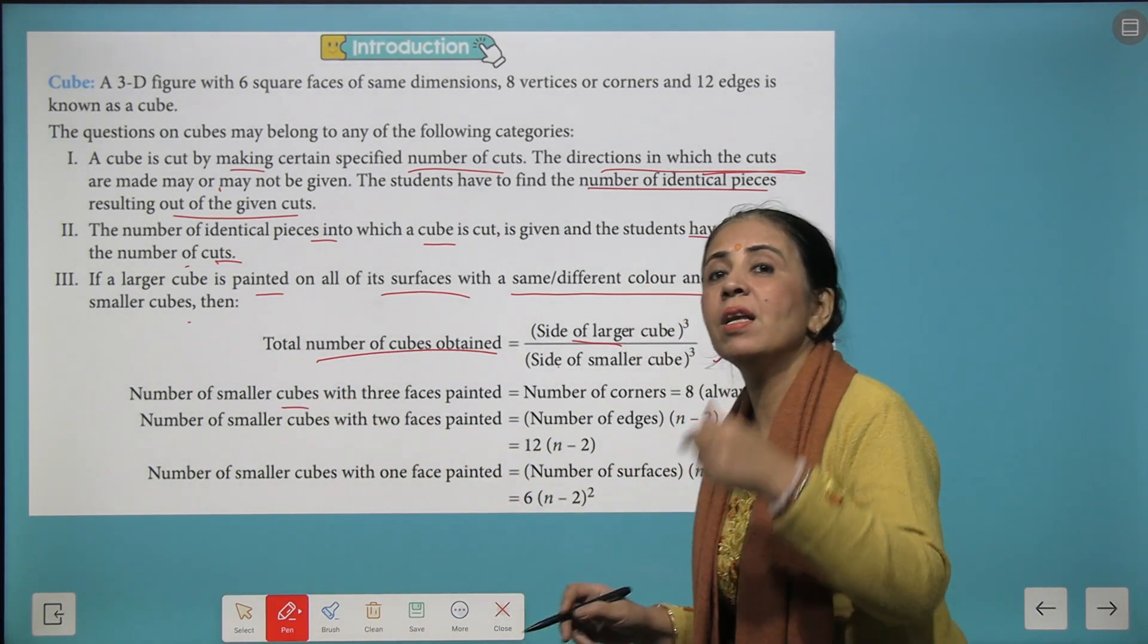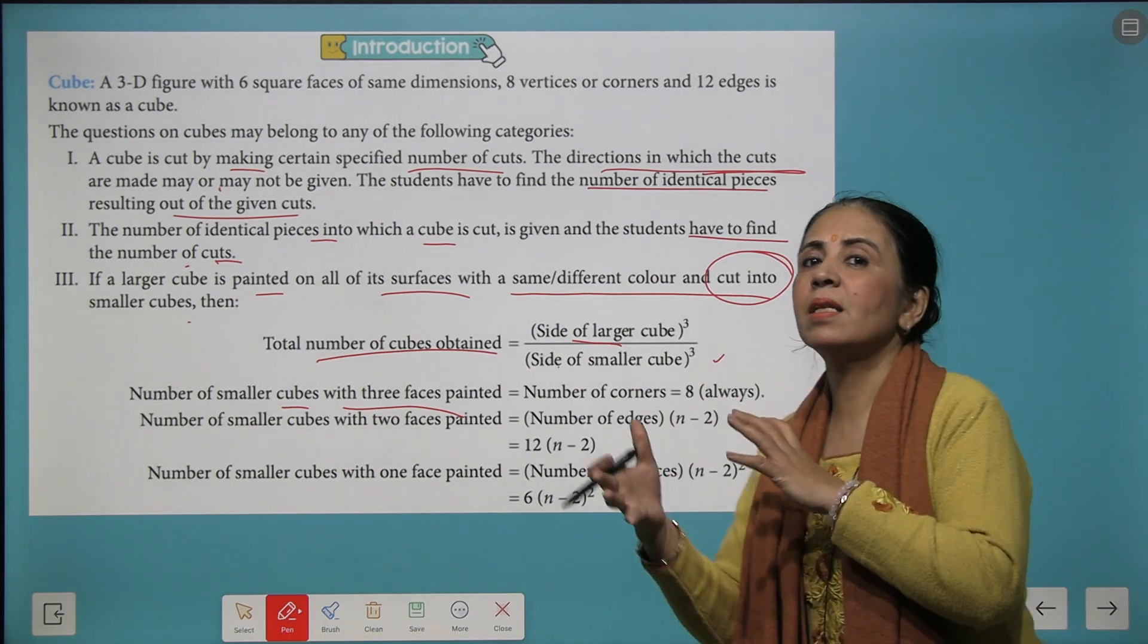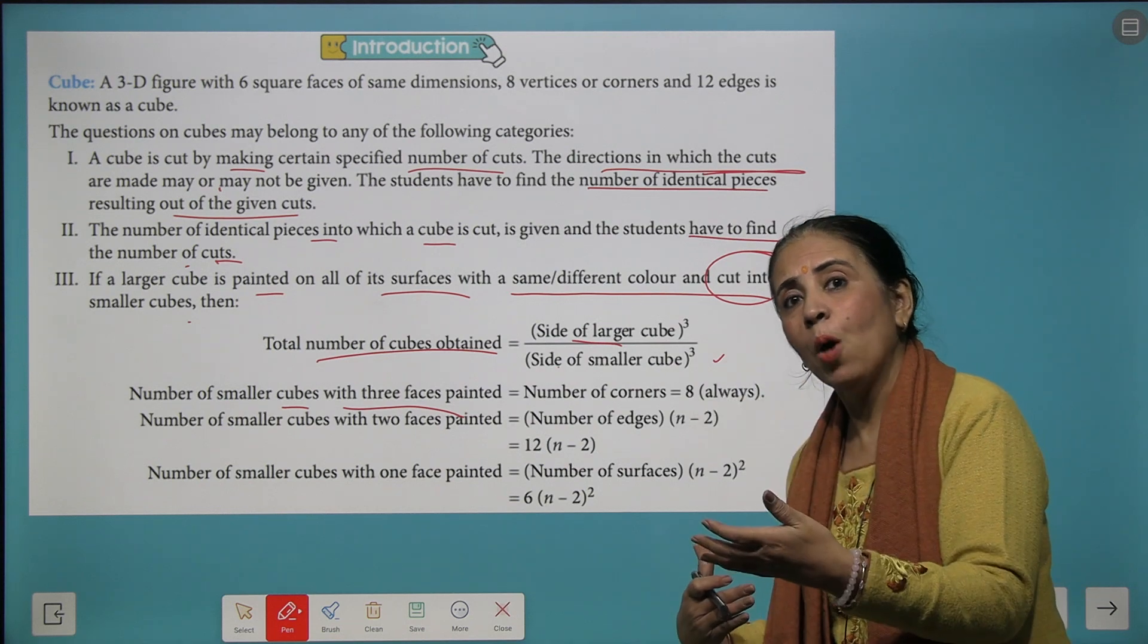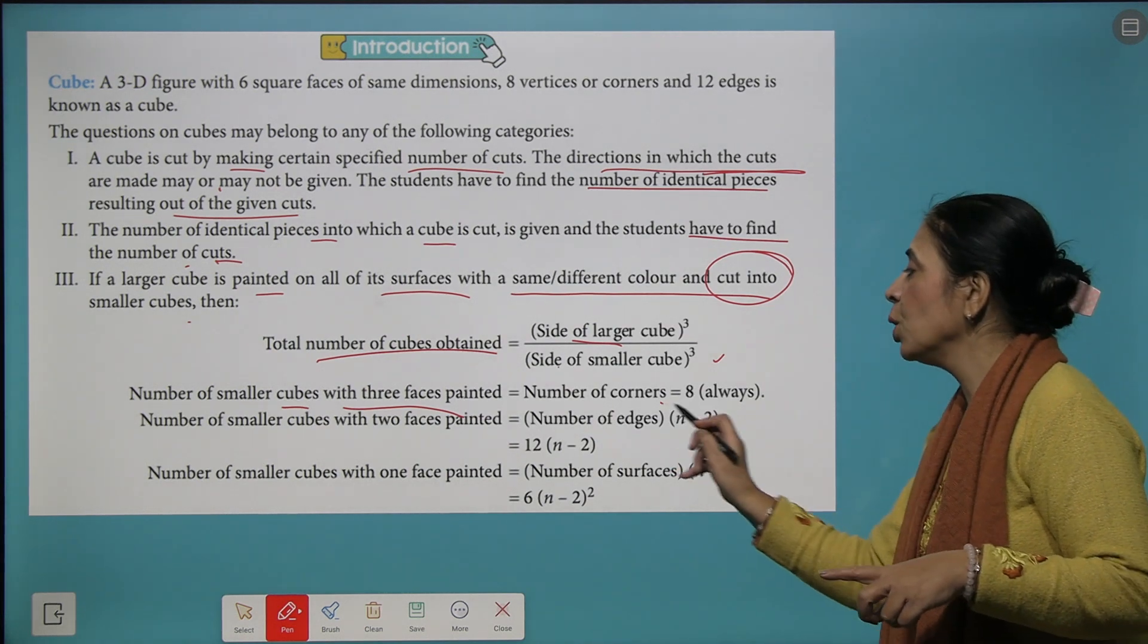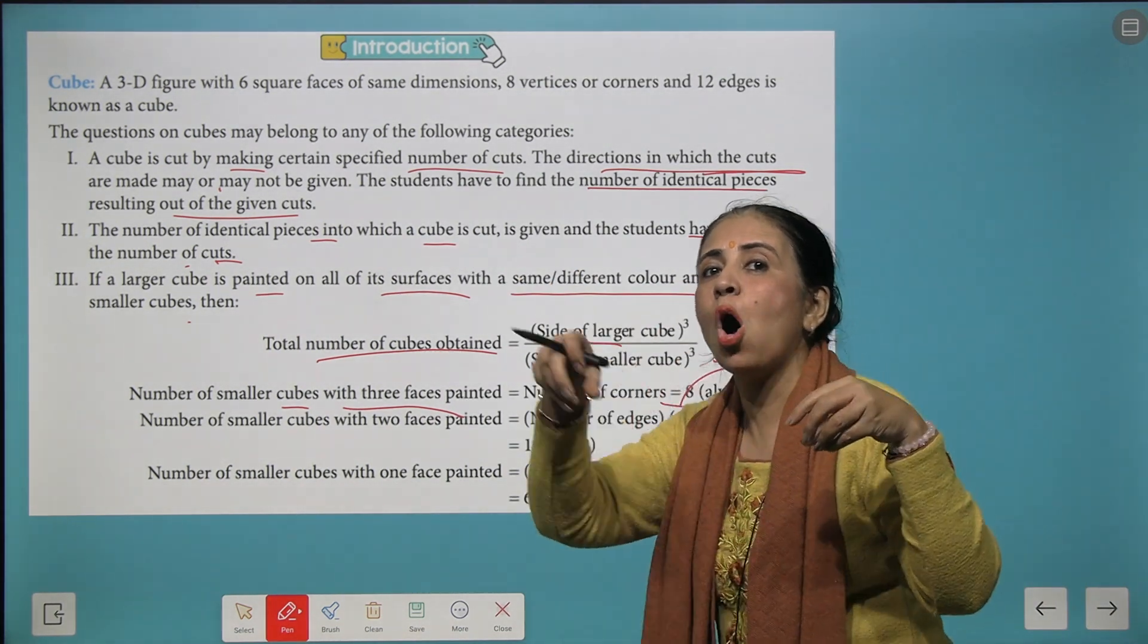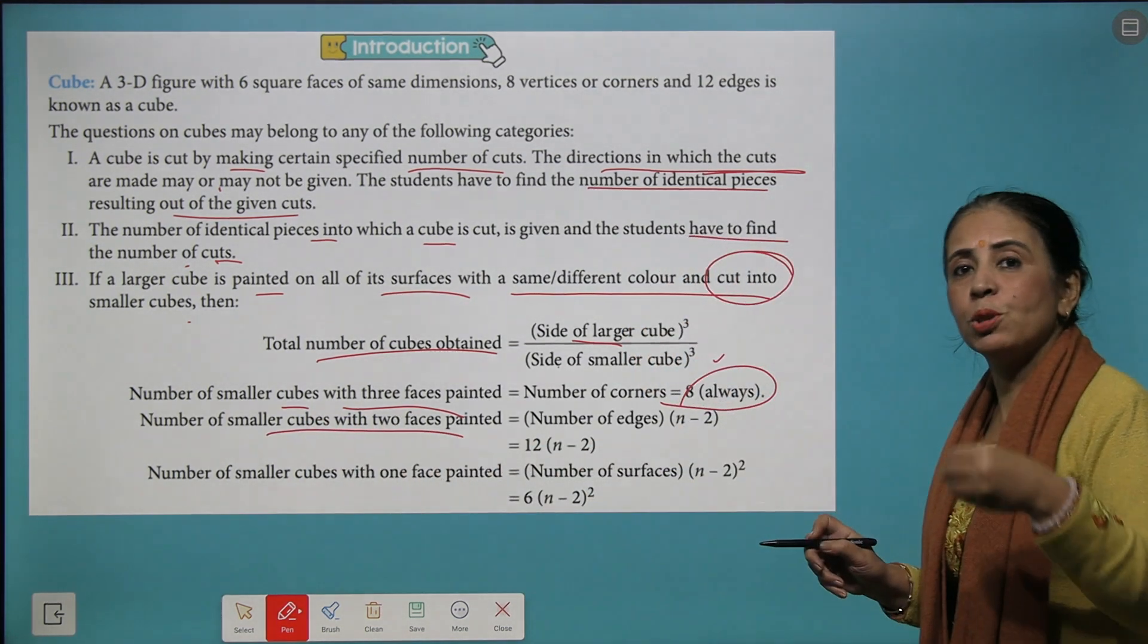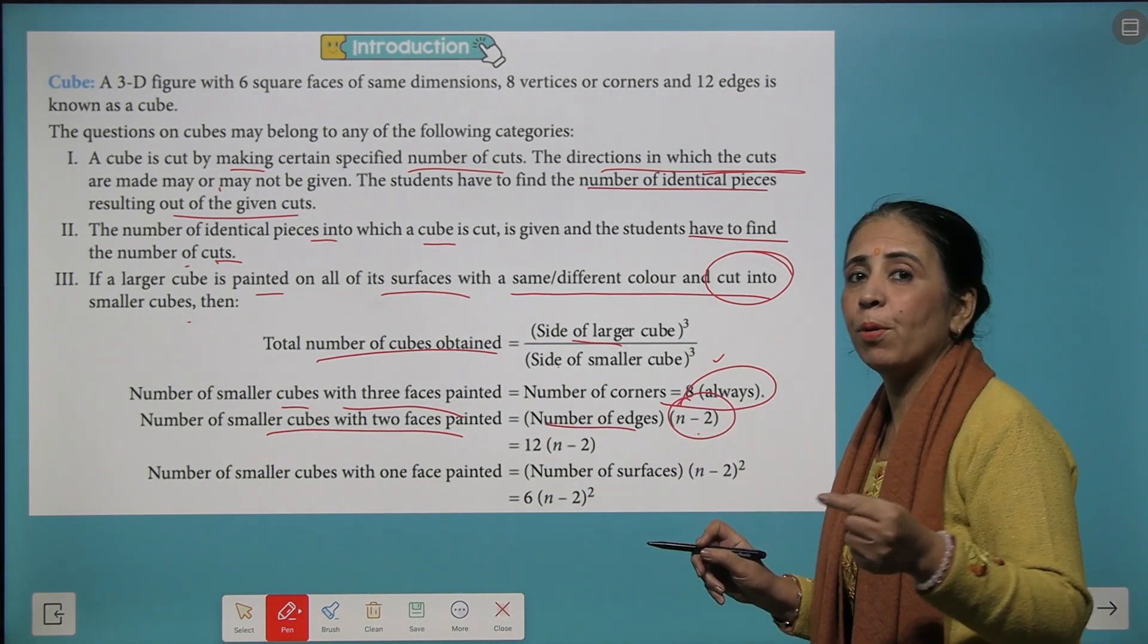Further if you want to find the number of smaller cubes which have 3 painted faces that means the entire cube is dipped into some color and when you divide it by cutting into smaller pieces then how many cubes will you get which will have 3 faces colored and the answer you will get is every time 8 and these 8 are the 8 corners of the cube. 4 top corners and 4 are the bottom corners. Then number of smaller cubes with 2 faces, we use the formula that is n minus 2 multiply the number of edges. I told you the number of edges. Yes that was 12.